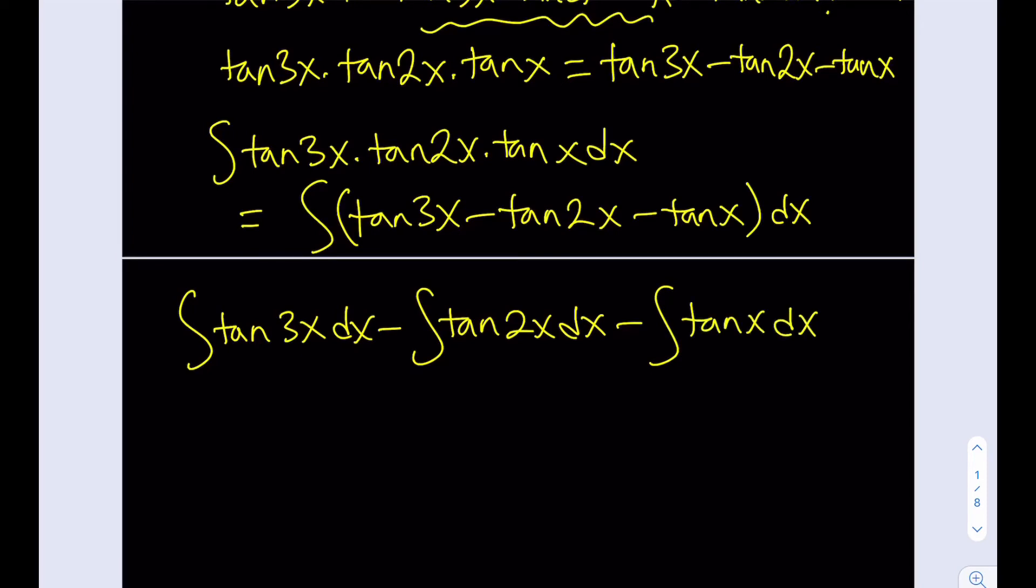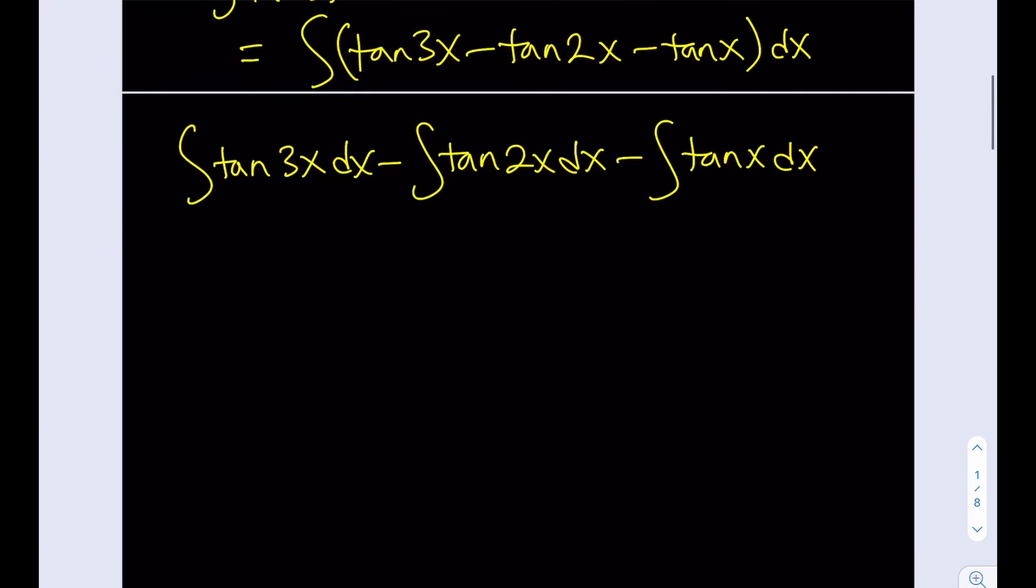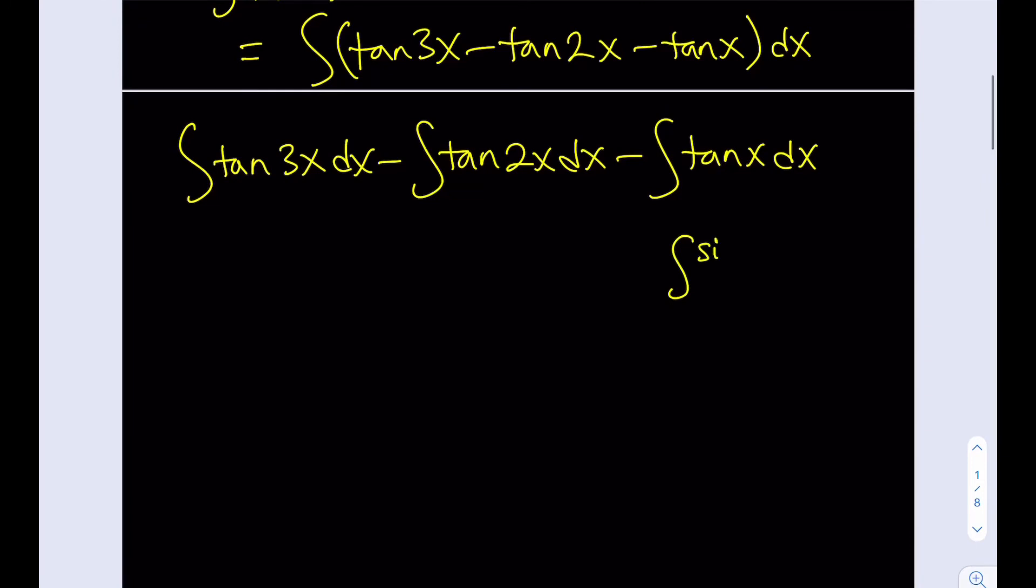We can just separate those and write each one as tangent 3x dx minus tangent 2x dx and minus tangent x dx. Okay, cool. Now it all comes down to the integral of tangent then. At this point you may or may not know the formula, but let's talk about that a little bit. How do you integrate tangent? You can do different kinds of things, but the most common approach here would be writing it as sine over cosine and then use the u substitution. Because if you say that u equals cosine x, then du would be negative sine x dx if you differentiate both sides.